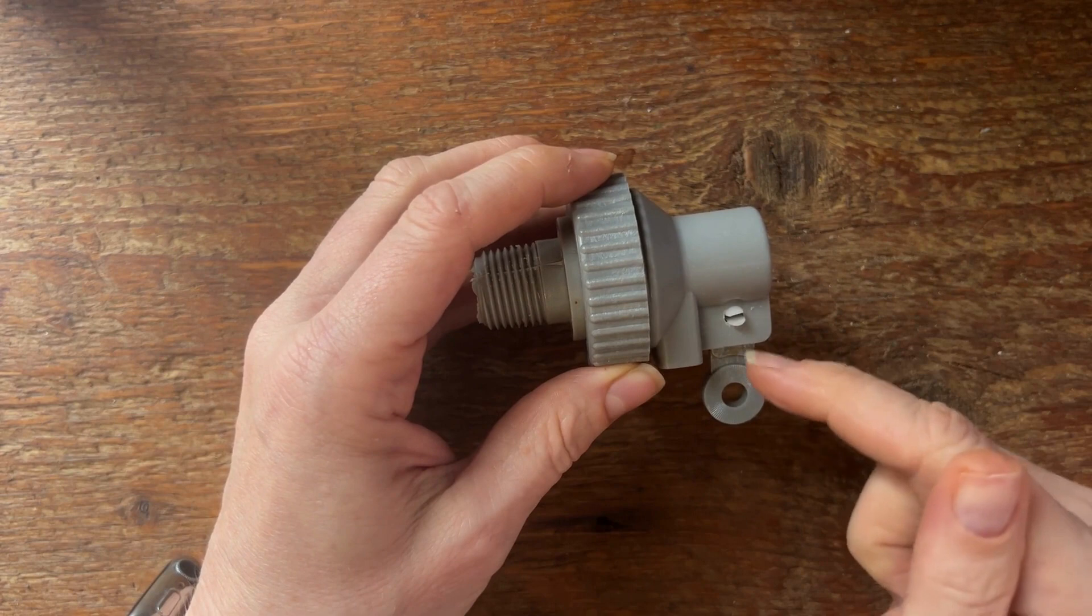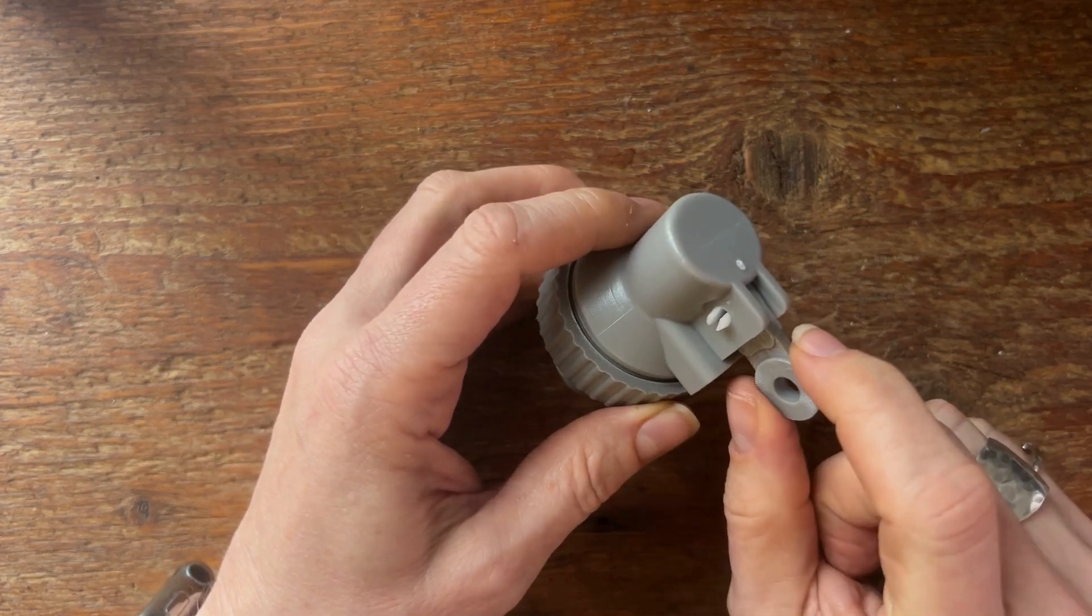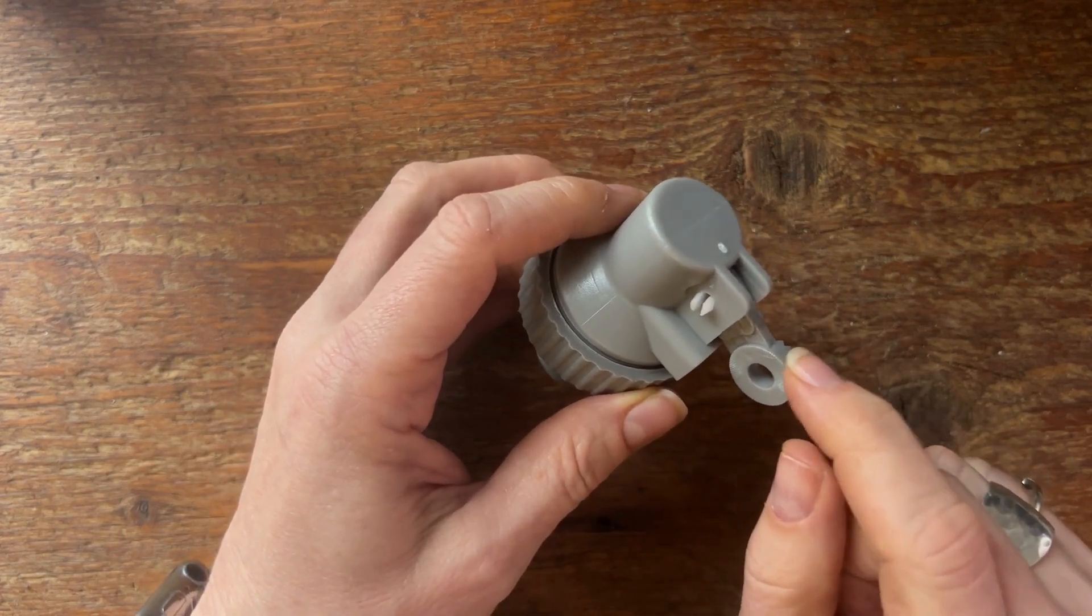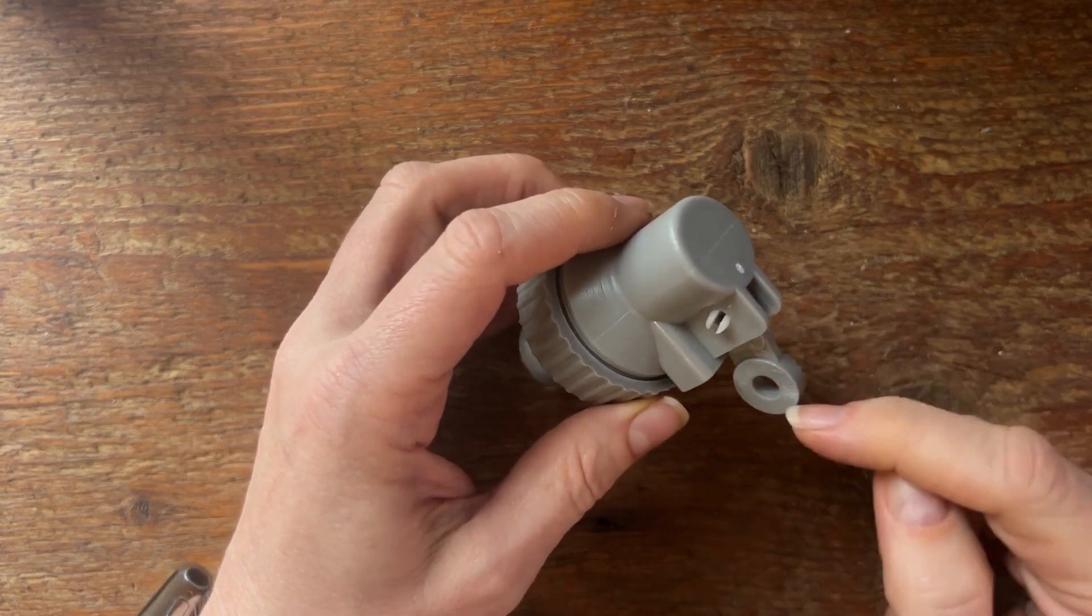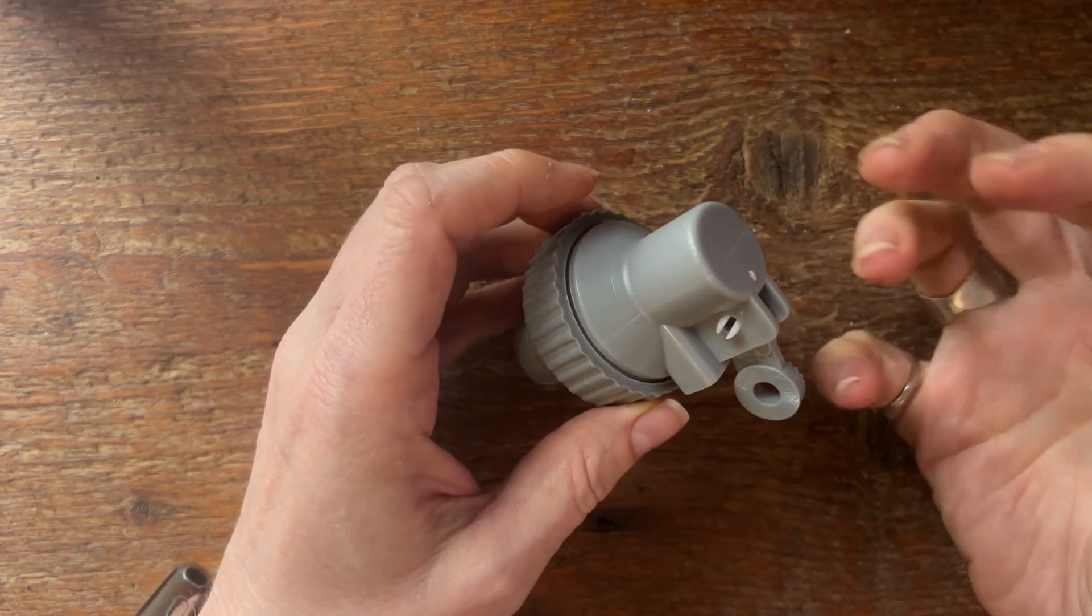If you ever need to take this valve arm out, this is actually part number VP29. If you ever need to change this or take it out without having to disassemble the entire thing, what you do is squeeze this pin together.